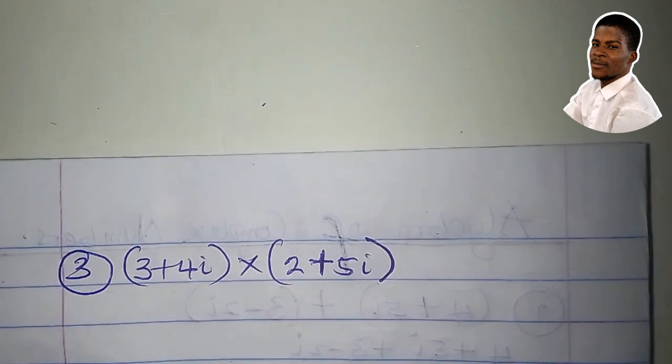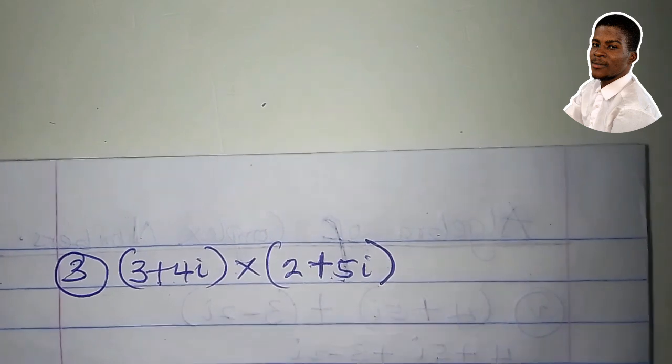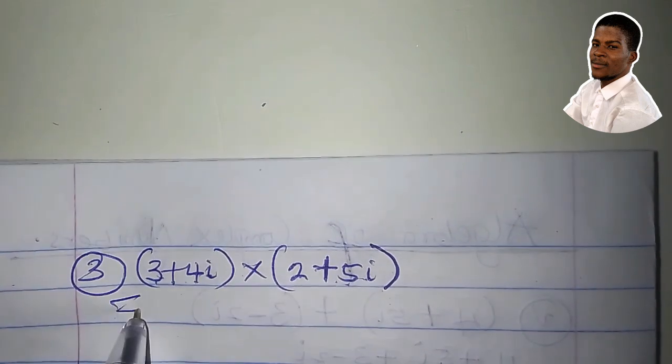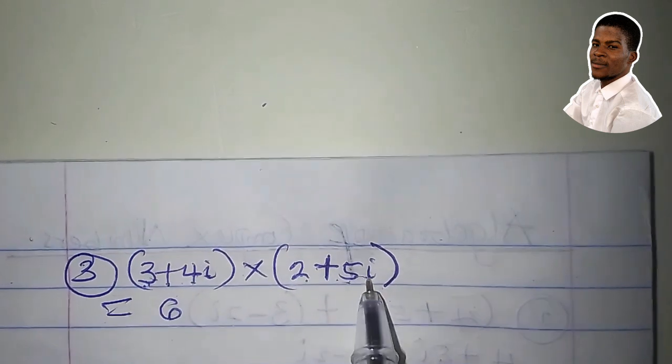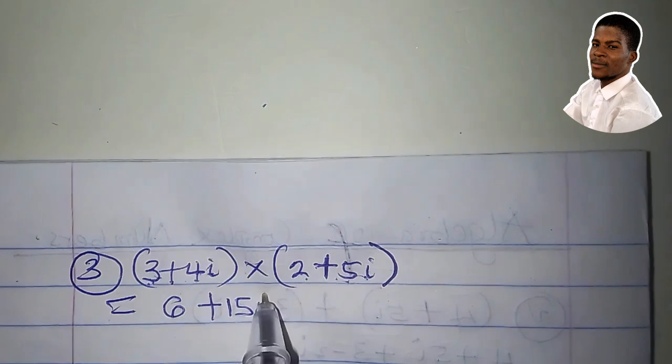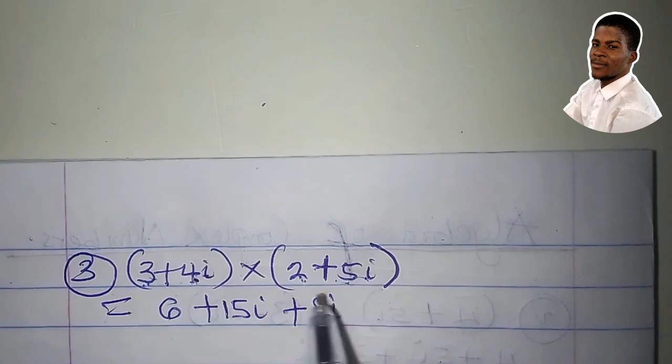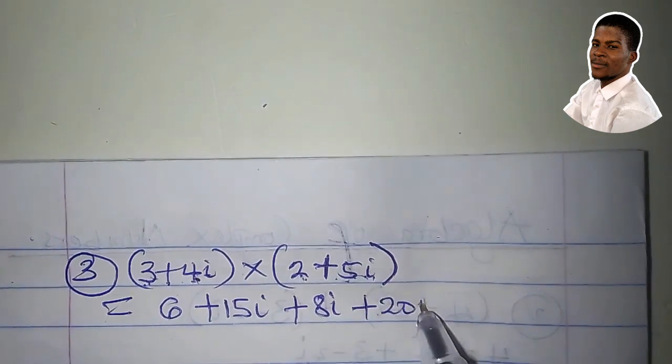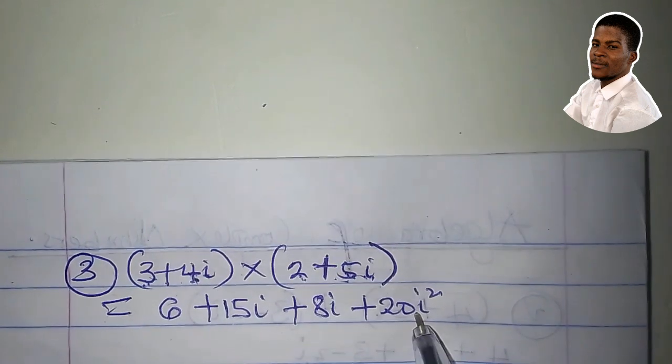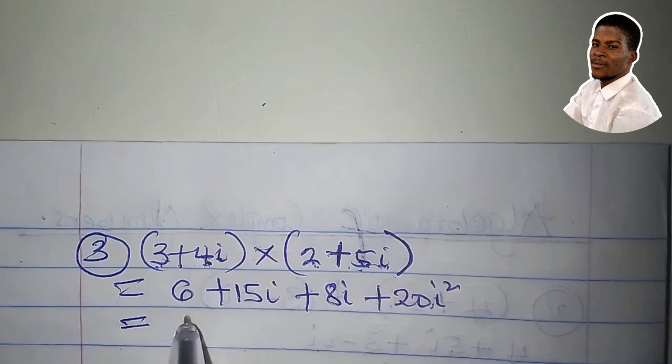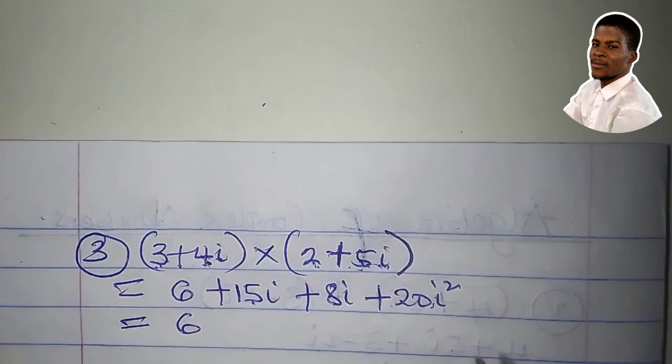Let's talk about multiplication. I have 3 plus 4i times 2 plus 5i. So here's how to multiply. 3 times 2, that's 6. 3 times 5i, that's 15i. 4i times 2, that's 8i. 4i times 5i, that's 20i squared. 4 times 5 is 20, i times i is i squared. So we have 6 plus 15i plus 8i is 23i.